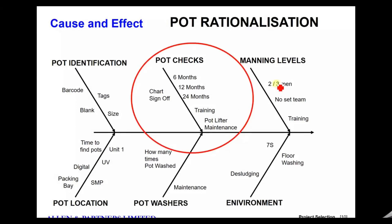Going back to the cause and effect diagram, the next variable was this: they had several different maintenance periods. Some pots were done every six months, some every 12, some every 24 months. Nobody knew why those three periods existed — they were just there. Not simple. Let's change it.